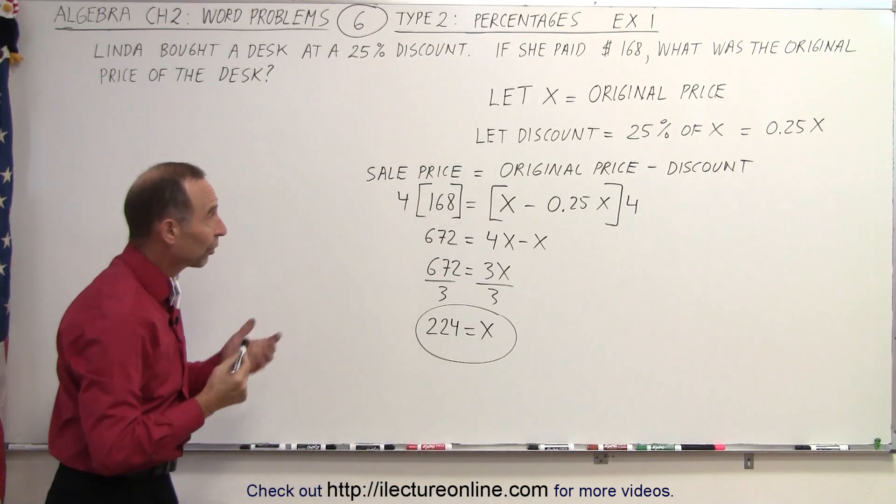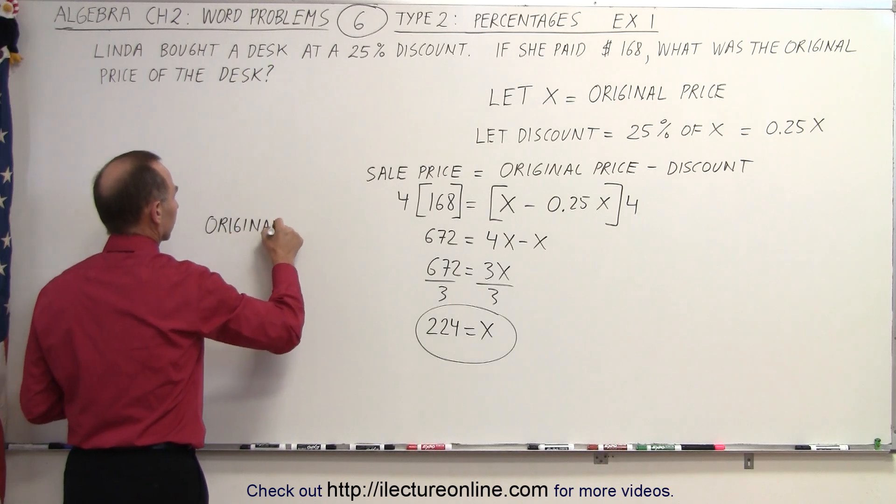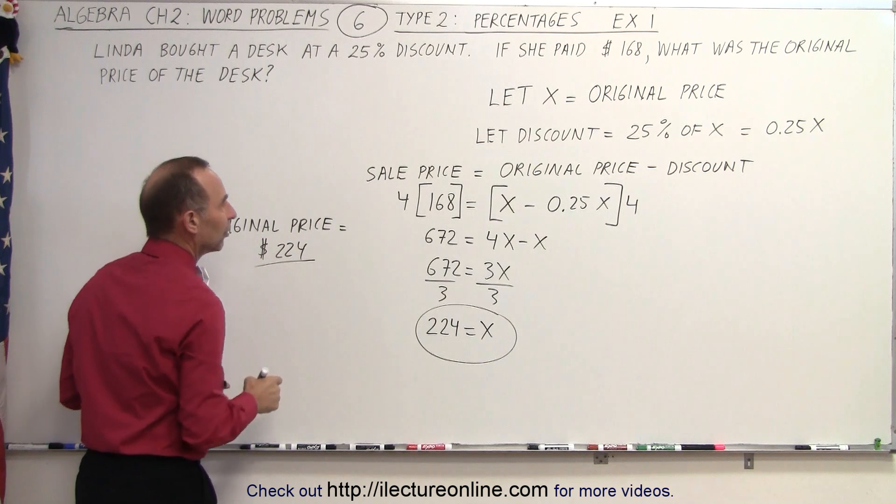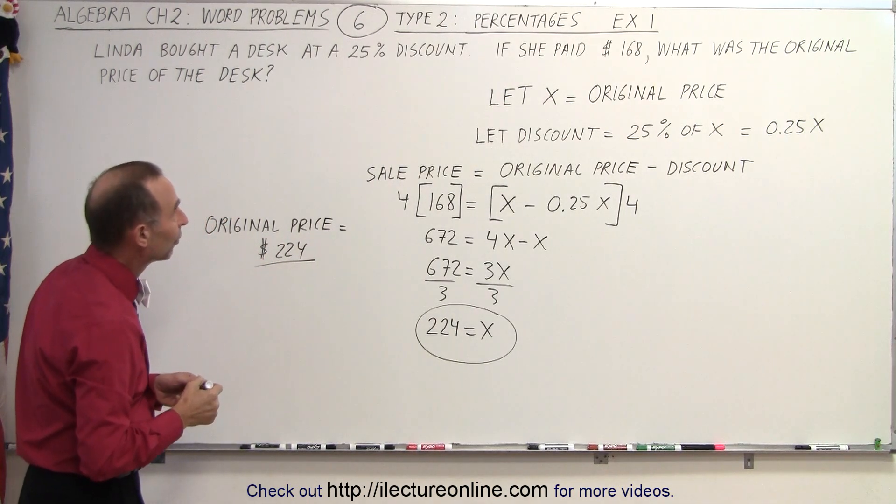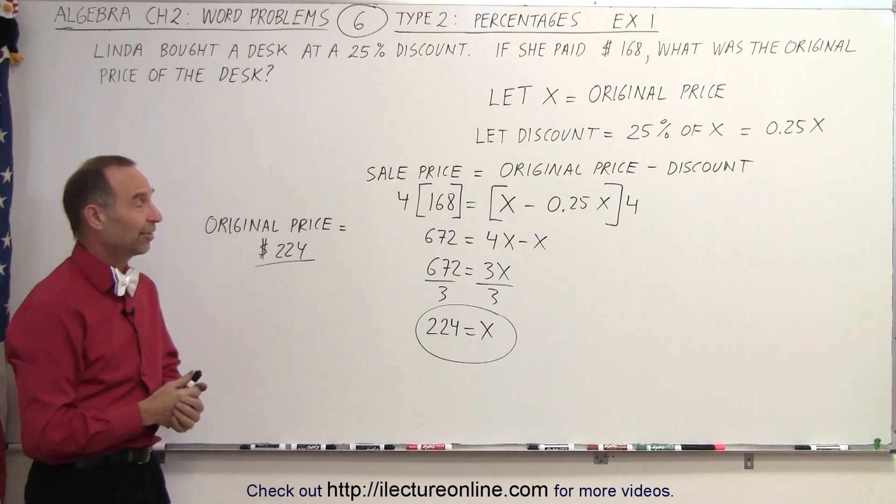And since x represented the original price, that means we can write that the original price was equal to $224. The discount 25% resulted in a sales price of 168. And that's how it's done.